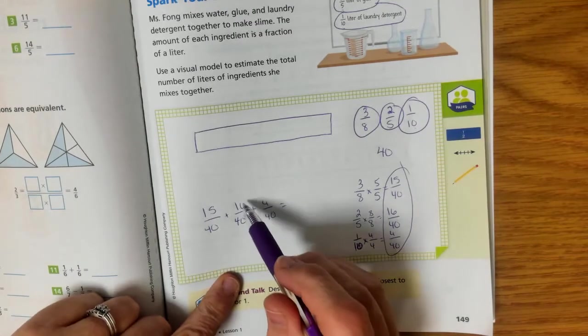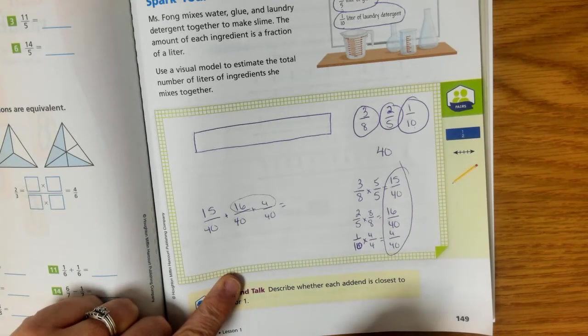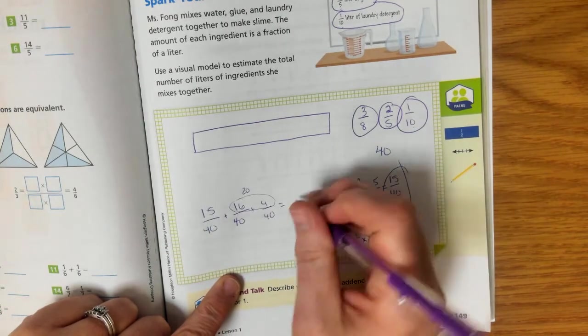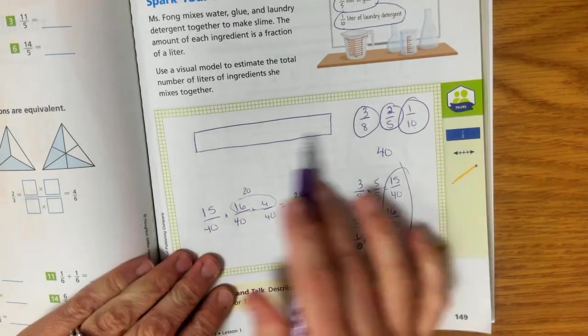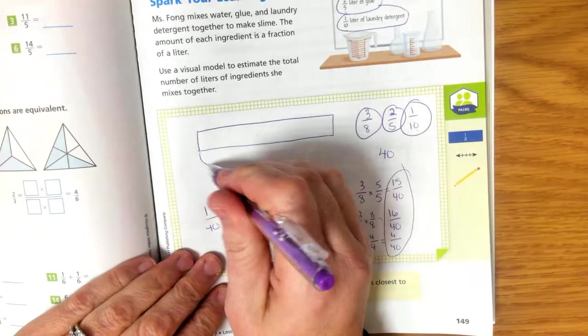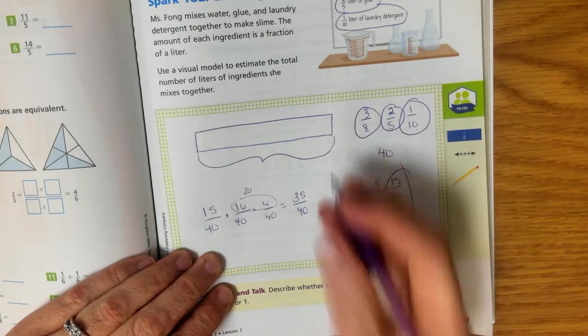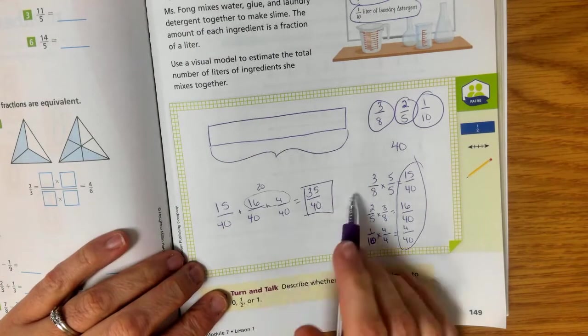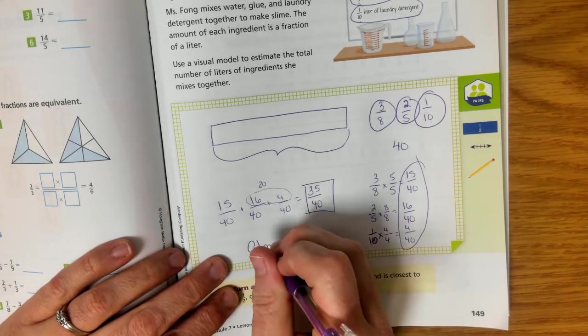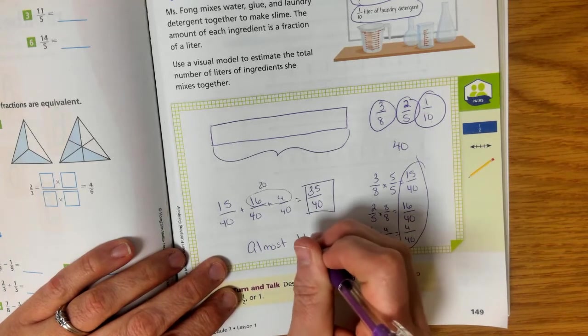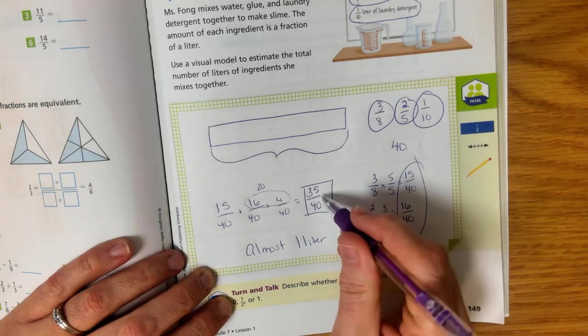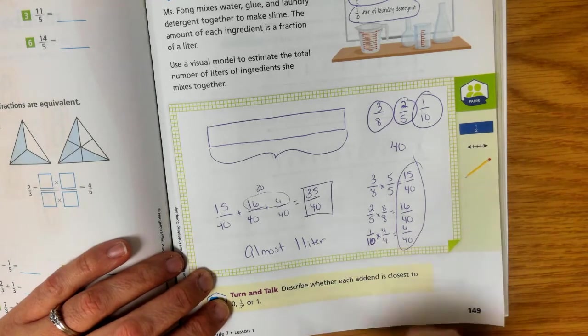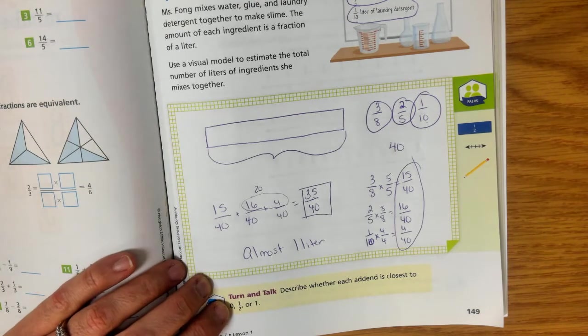So when I look at these numbers, I can see that this makes it easy, right? 16 plus 4, that is easily 20. And then I can add 20 plus 15, and that's 35 fortieths. So if my whole thing was out of fortieths, then 35 fortieths is almost 1 liter. So by estimating, we can say that this is almost 1 liter. Because we are very close. If I had 40 over 40, that would be one whole, correct? So this isn't quite there yet. It's 5 fortieths less, but we're so close, so we can use that as our answer.